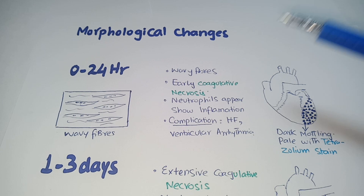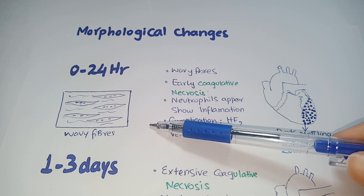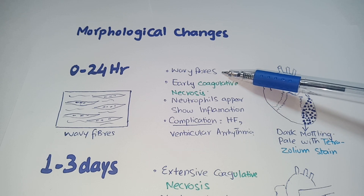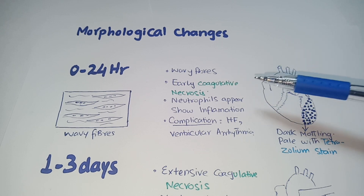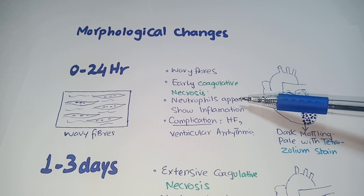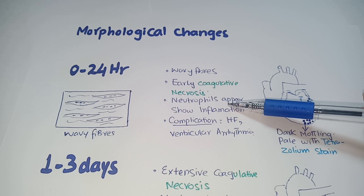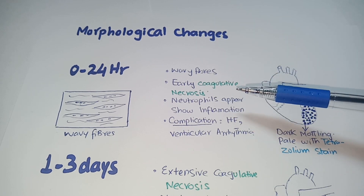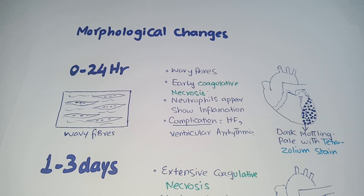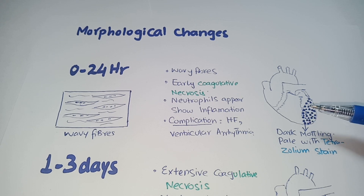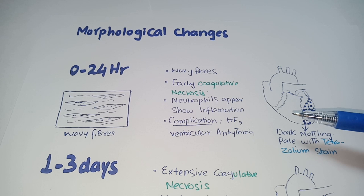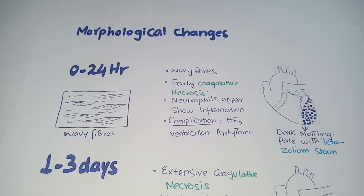Regarding morphological changes during the first 24 hours following myocardial infarction: fibers become wavy, early coagulative necrosis starts, and early neutrophilic appearance begins — indicating that inflammation is starting. When blood vessels of solid organs are occluded, it results in coagulative necrosis. As the figure shows, there is dark mottling, and it is very difficult to appreciate myocardial infarction during early stages, but tetrazolium stain makes it easy to diagnose.